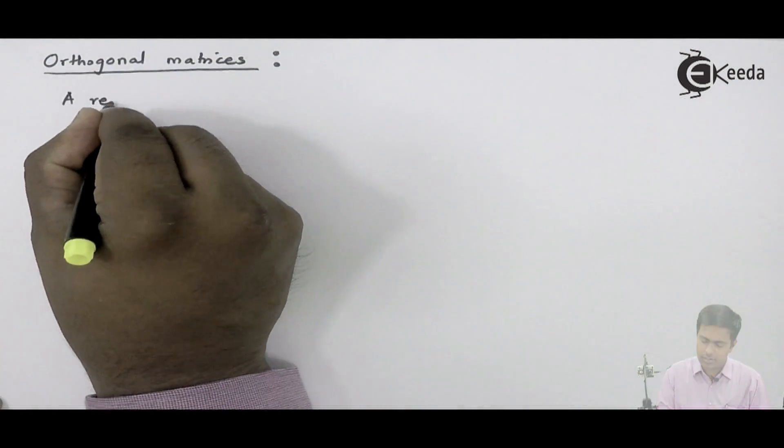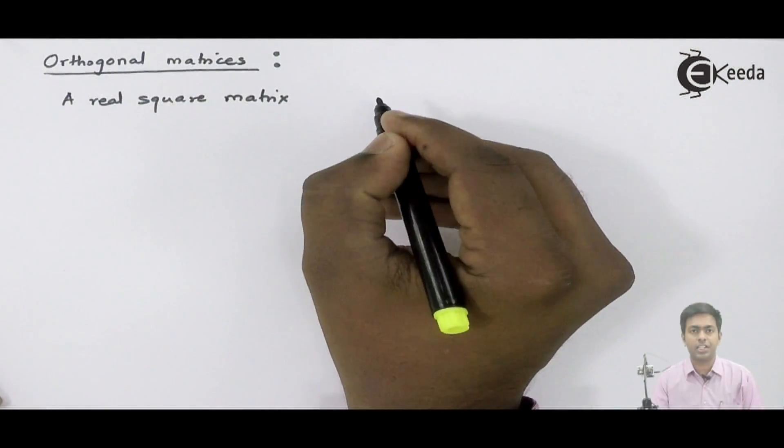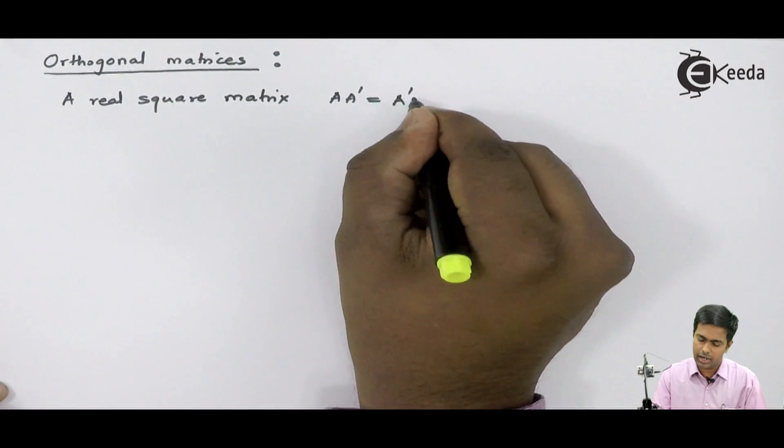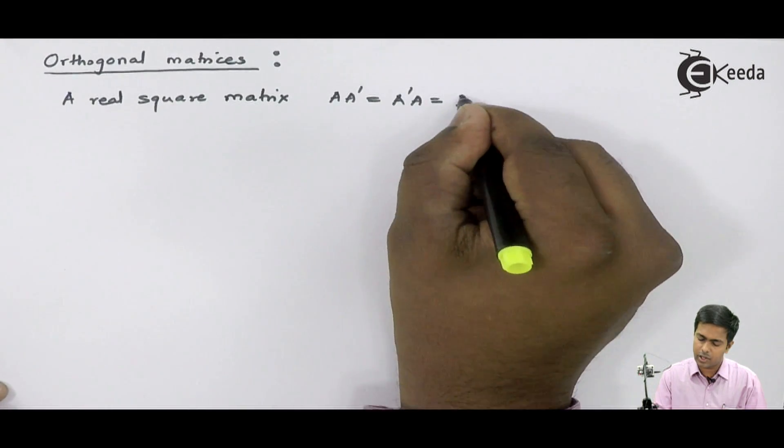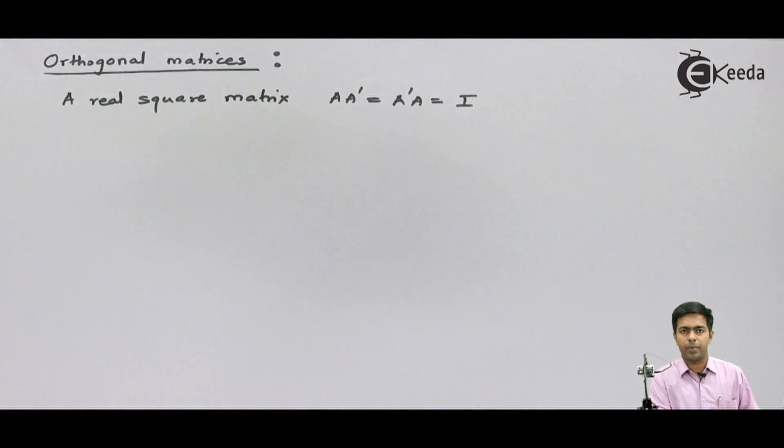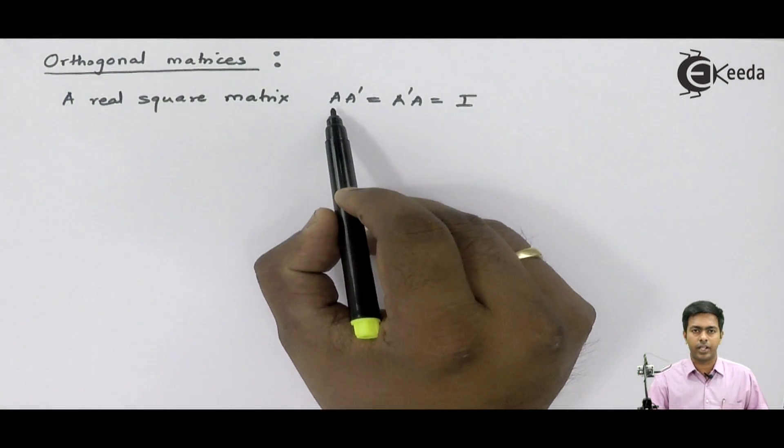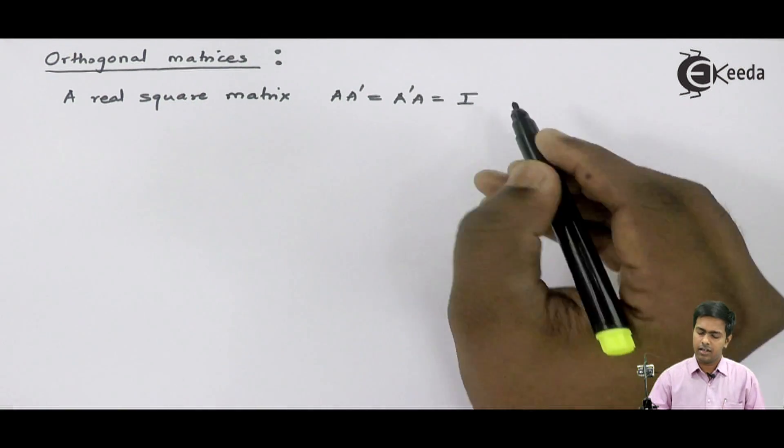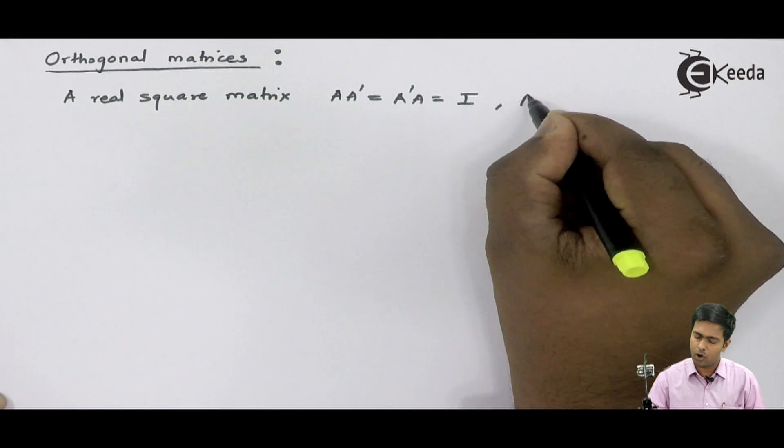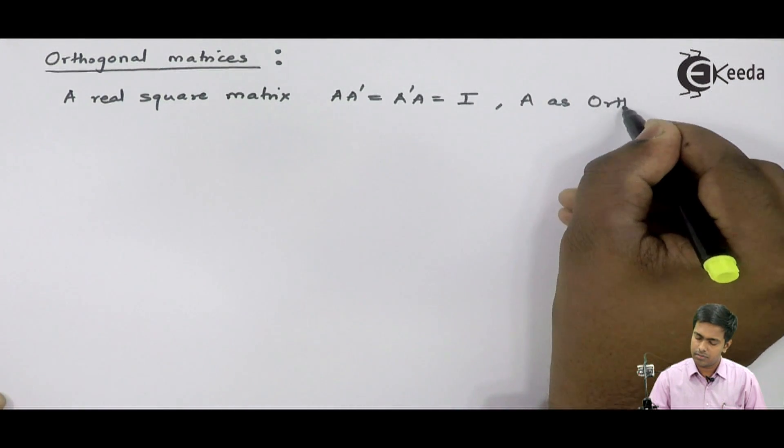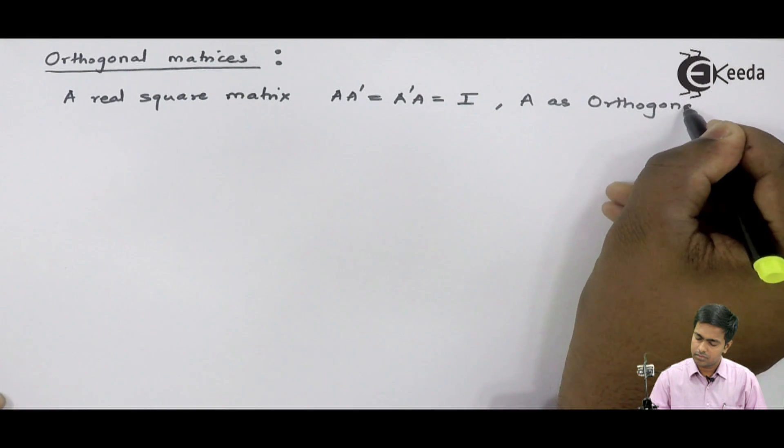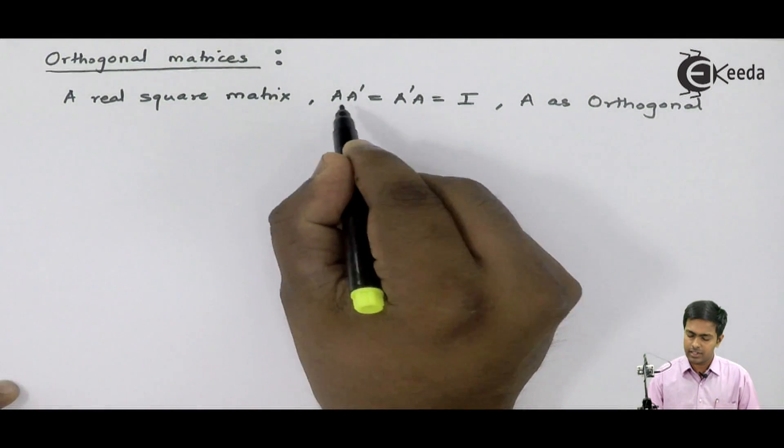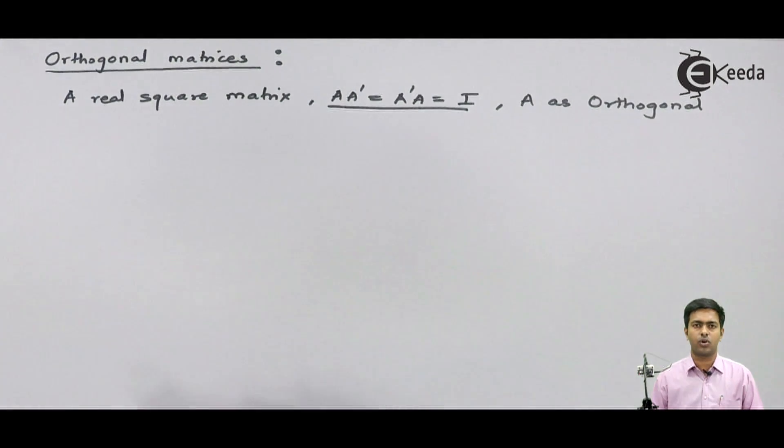A real square matrix which satisfies one condition that is A into A dash or A dash into A is equal to I. It means if we multiply any matrix with its transpose and if it is giving us the identity matrix, then in such case, we call A as orthogonal. Any real square matrix which satisfies this condition is called as orthogonal matrix.